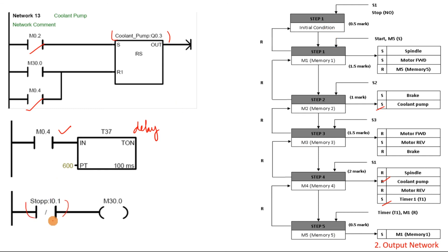The stop button, which is a normally closed momentary switch, will turn on M30. That is why in the previous networks you can see M30 being fed to the reset part of every step and output network. That is all for the step sequence transformation into a ladder logic diagram using the reset and set function. Remember, there are two networks: the first is the step sequence network covering the movement from initial condition to the end of the steps, and the second is the output network which translates all the output conditions for each actuator. I will see you again in the next chapter.